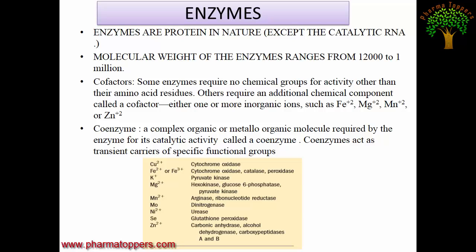For example, cytochrome oxidase is an enzyme that requires Cu²⁺ as a co-factor. Similarly, enzymes like peroxidase, pyruvate kinase, dinitrogenase, and urease all require various co-factors. In the presence of these co-factors, these enzymes show catalytic activity — either the activity increases or the enzyme becomes active.